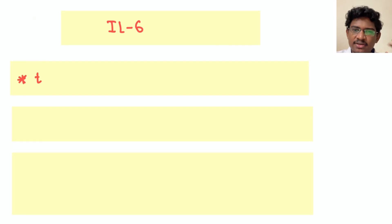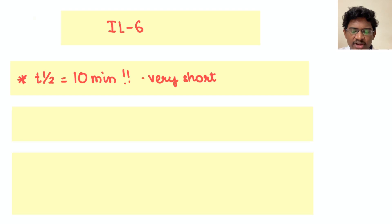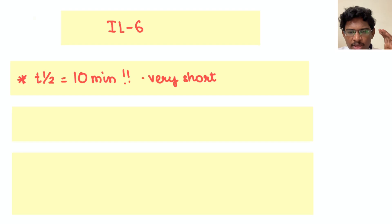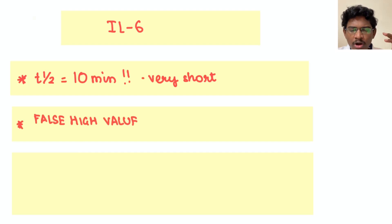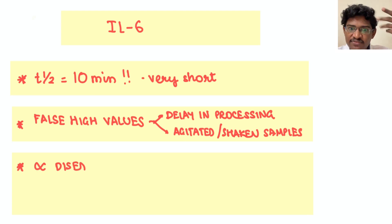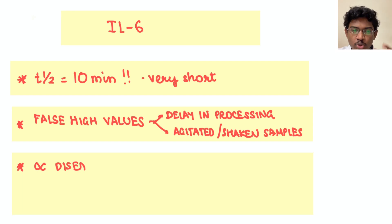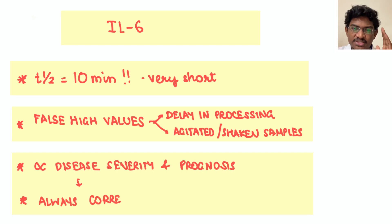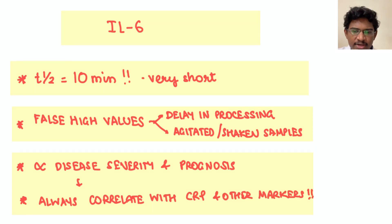The cytokine interleukin-6 is produced in abundance in COVID. One important thing to know: its half-life is just 10 minutes. If you take the blood sample and keep it for a long time before processing, all the cells will leak interleukin-6 into the serum sample, giving erroneously high values. In COVID, we got lots of patients with only interleukin-6 elevated and all other markers exactly normal — this sample handling issue is the main reason. So don't panic solely based on interleukin-6 levels. For mild patients, there is no need to test interleukin-6 at all; only for moderate and severe patients. Process it fast, and always correlate with other clinical markers.